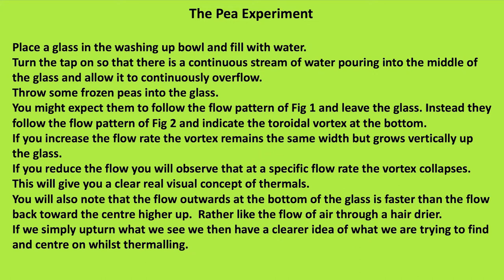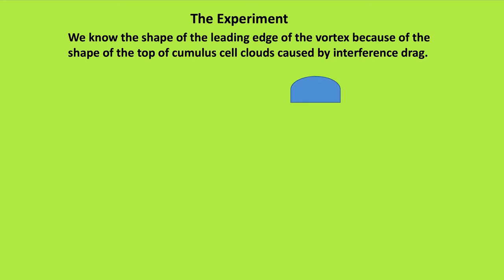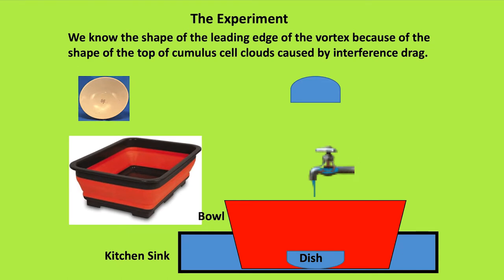This will give you a clear, real visual concept of thermals. You'll also note that the flow outwards at the bottom of the glass is faster than the flow back towards the centre higher up — rather like the flow of air through a hairdryer. If we simply turn up what we see, we then have a clearer idea of what we're trying to find and centre on whilst thermalling, although we can't see it. We know the shape of the leading edge of the vortex because of the shape of the top of cumulus cell clouds, called interference drag. So here's my bowl, which is the shape of the top of a thermal, and here's my washing up bowl — I'm going to put both of these in the kitchen sink.